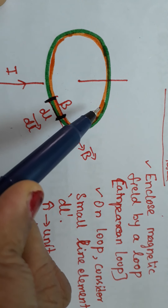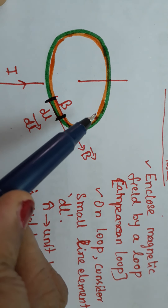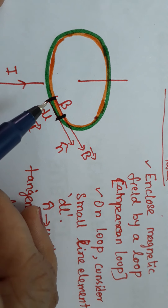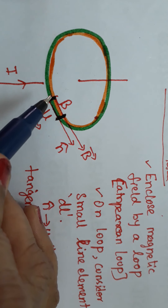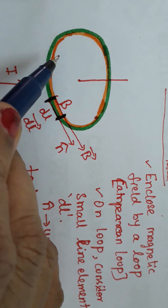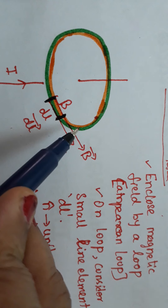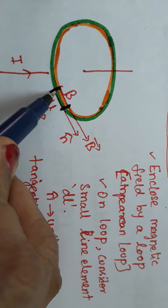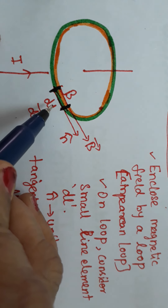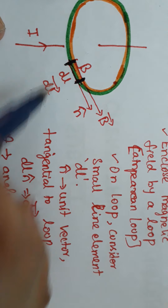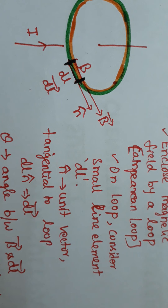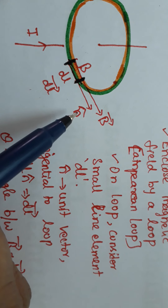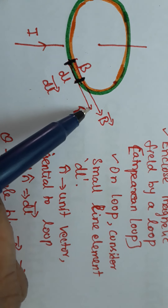That is the magnetic field. Now, to capture the magnetic field, you use a loop called the Amperian loop — an imaginary loop that encloses the magnetic field. On the Amperian loop, you consider a small portion called the line element dL. To convert dL into a vector, you introduce a unit vector n̂, which is tangent to the Amperian loop.